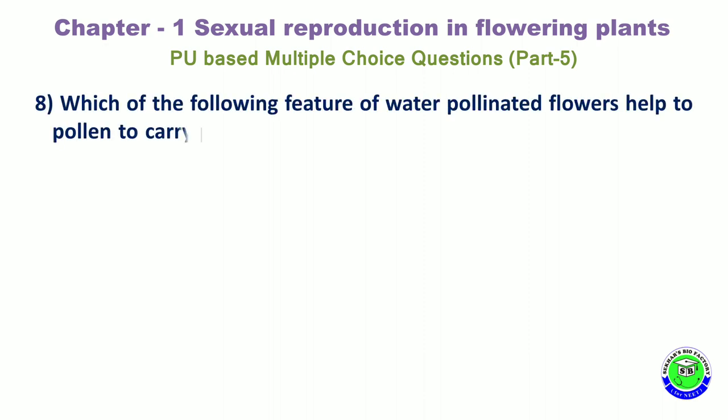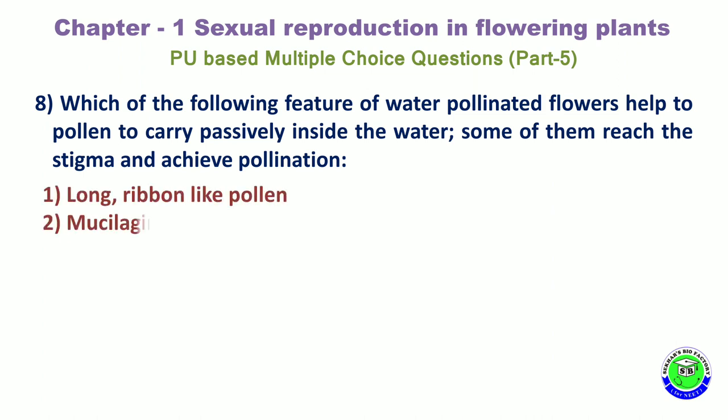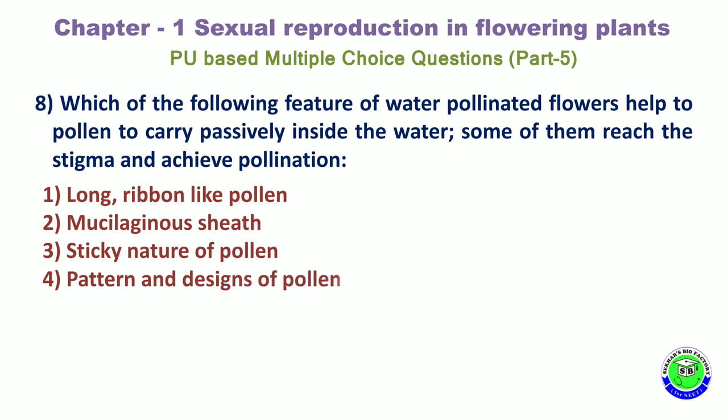Question 8. Which of the following features of water-pollinated flowers help pollen to be carried passively inside the water, so that some of them reach the stigma and achieve pollination? Option 1: Long ribbon-like pollen. Option 2: Mucilaginous sheath. Option 3: Sticky nature of pollen. Option 4: Pattern and design of pollen. The correct answer is the 1st option.